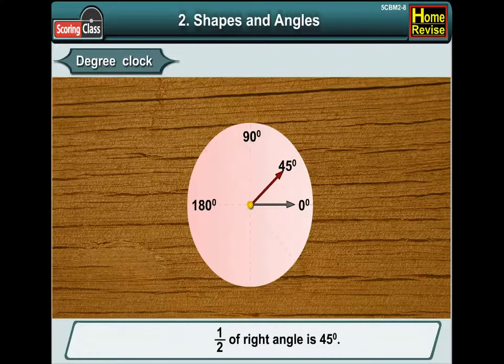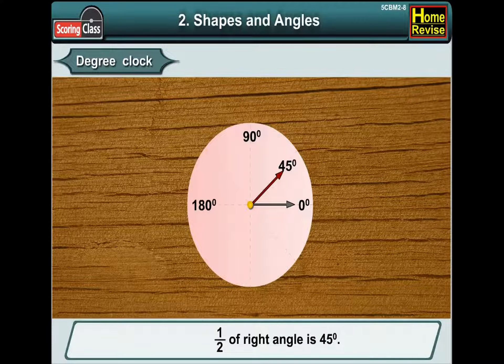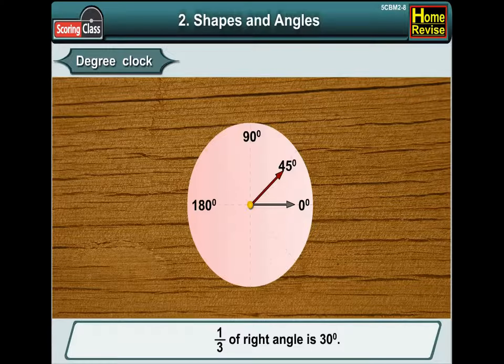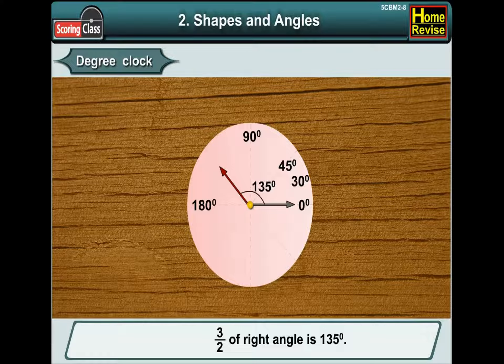So, half of right angle would be, correct, 45 degrees. And one-third of right angle is 30 degrees. 3 upon 2 of right angle is 135 degrees.